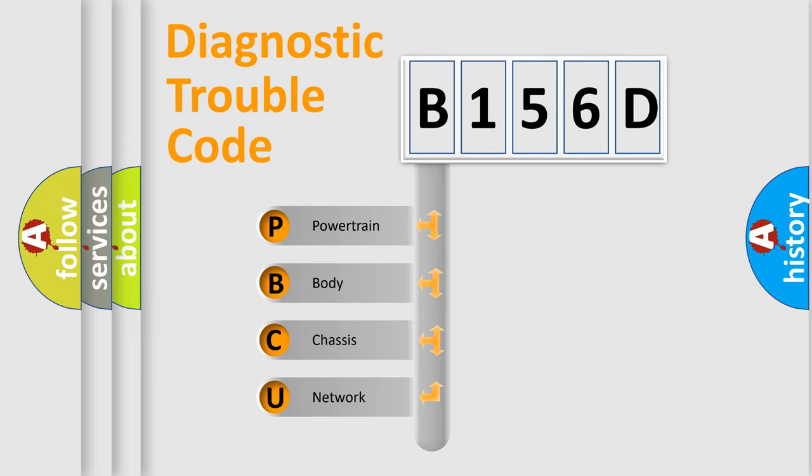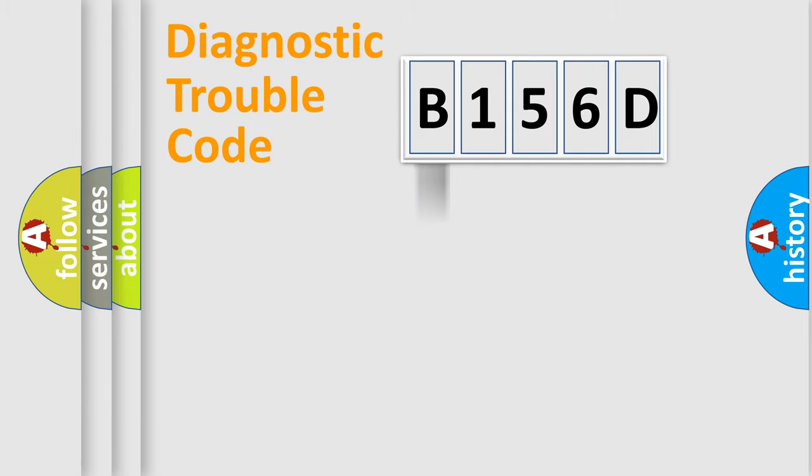We divide the electric system of automobile into four basic units: powertrain, body, chassis, network. This distribution is defined in the first character code.